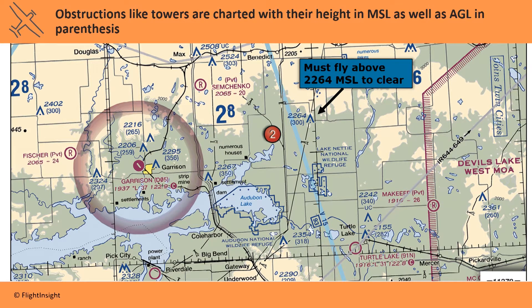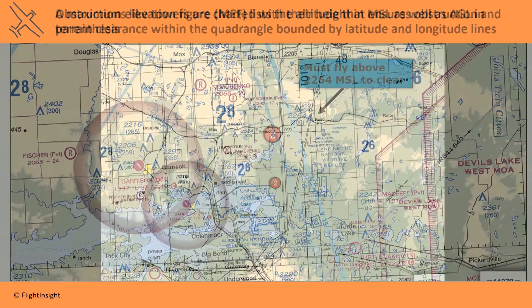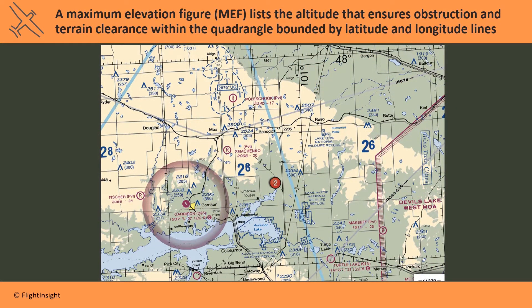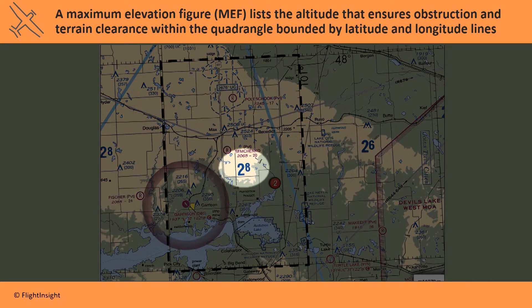Obstructions like towers are charted with their height in MSL, as well as AGL in parentheses. So the difference between the two figures is the elevation at the base of the obstruction. In any area, a maximum elevation figure lists the altitude that ensures obstruction and terrain clearance within the quadrangle bounded by latitude and longitude lines. Here, the 2-8 symbol means the highest terrain or obstruction within the quadrangle can be cleared by flying 2,800 feet MSL or above, though this altitude may not necessarily be legally allowable, as we'll see in Chapter 6.